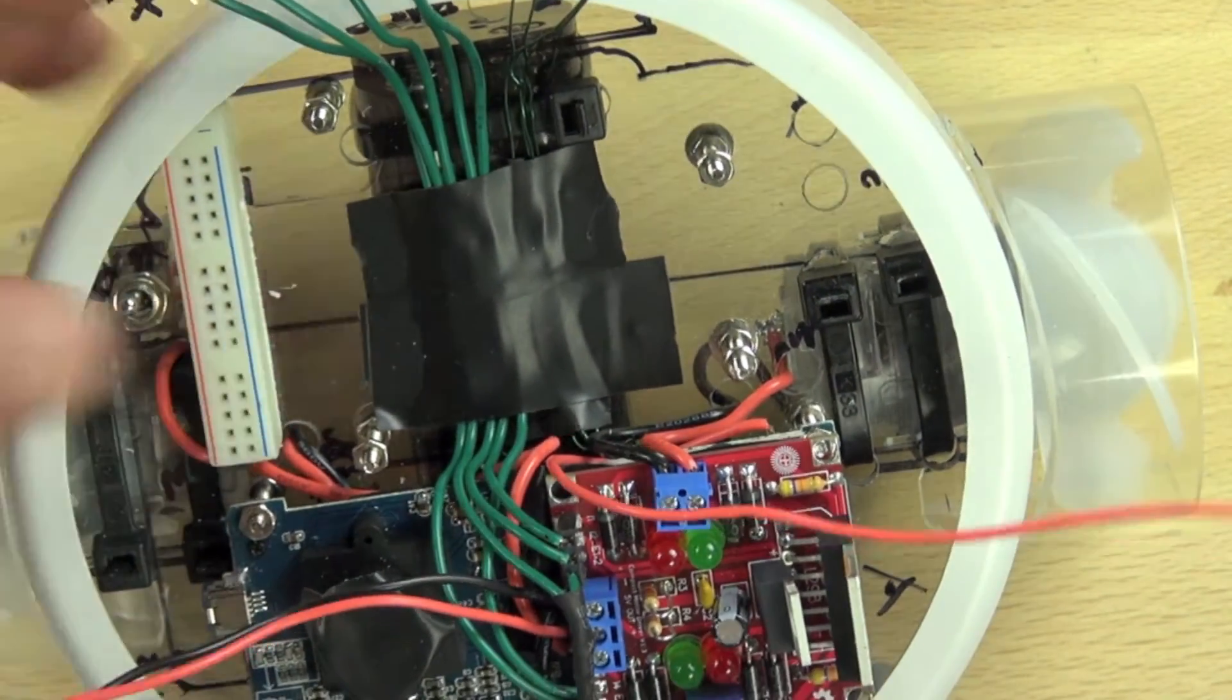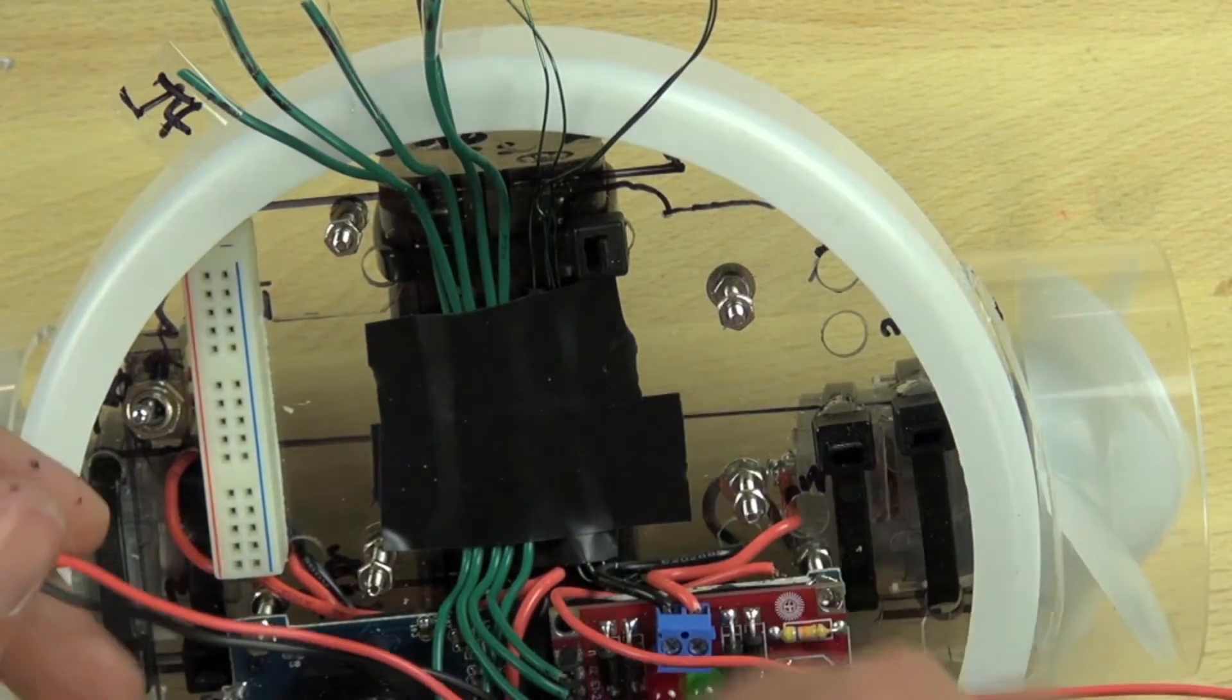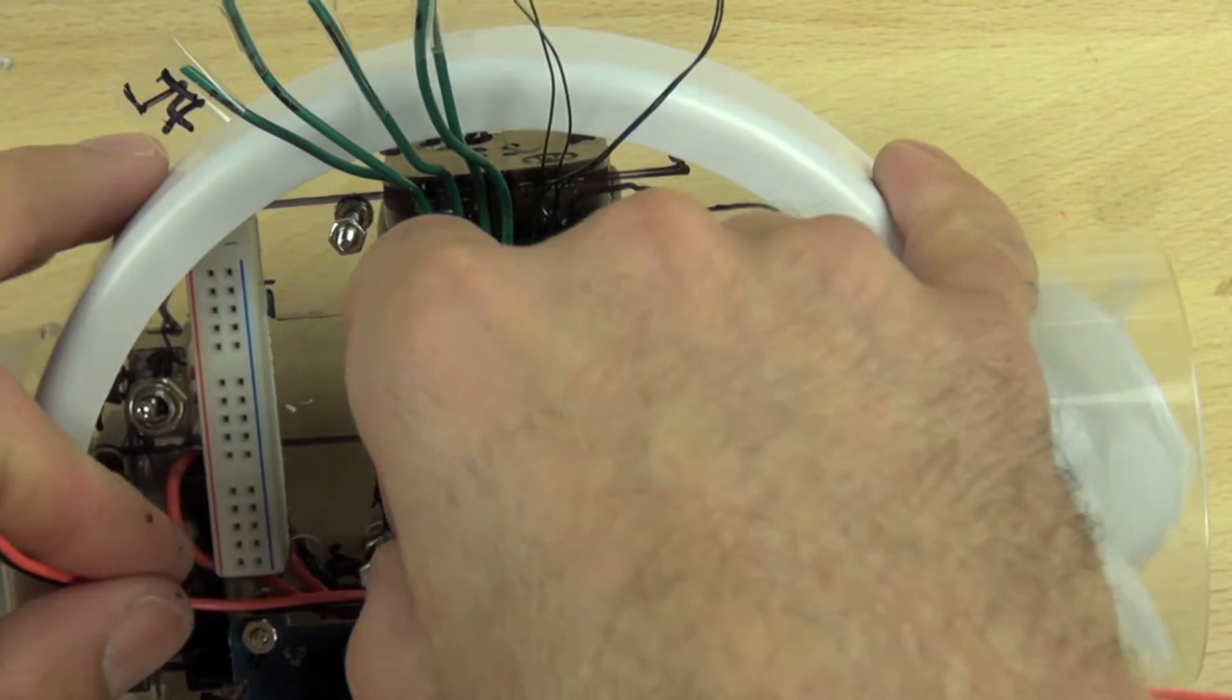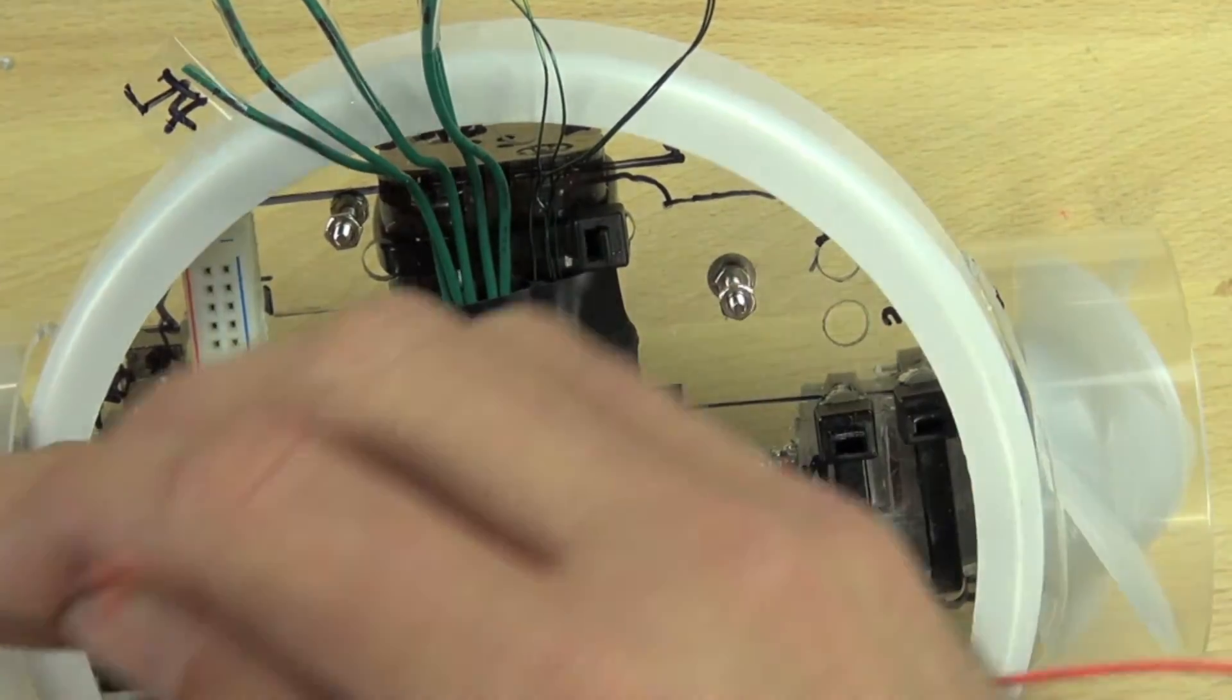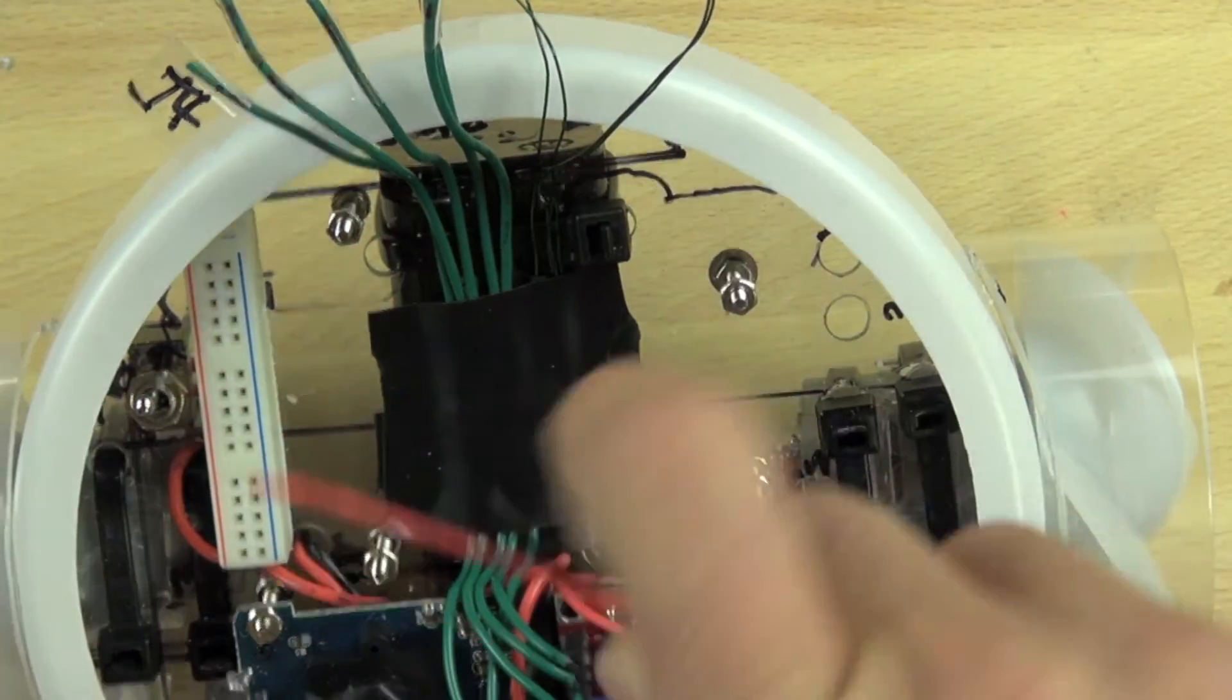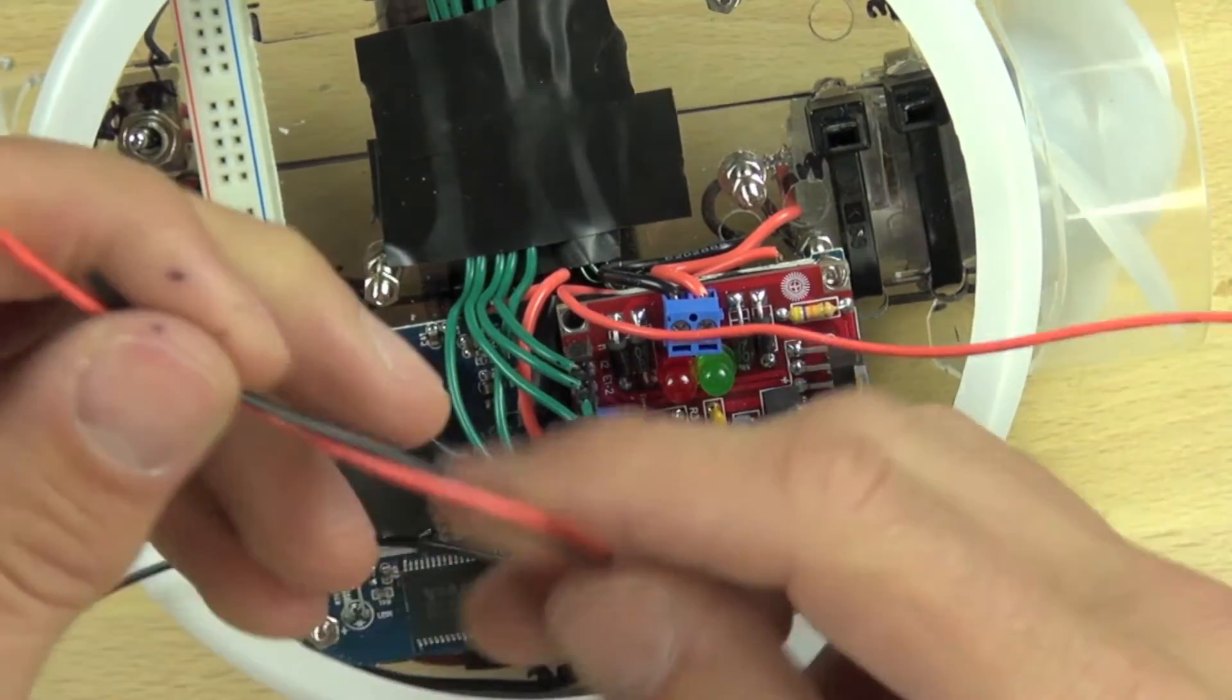Alright, so we've got our power distribution here, and this is for five volts. And so we're going to take our five volt power from here, and we're going to need to be careful how we route this. I think we're going to go underneath all these other wires here, so that we can get the power over to where we want it.